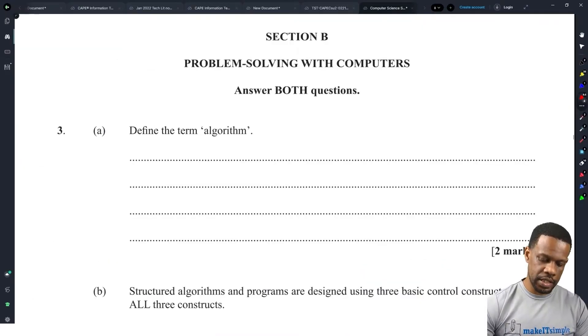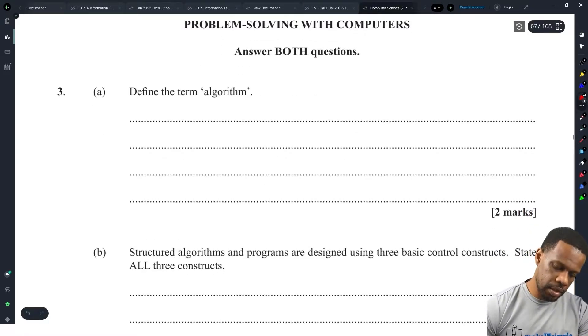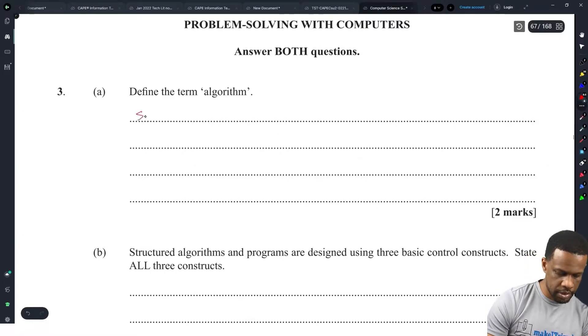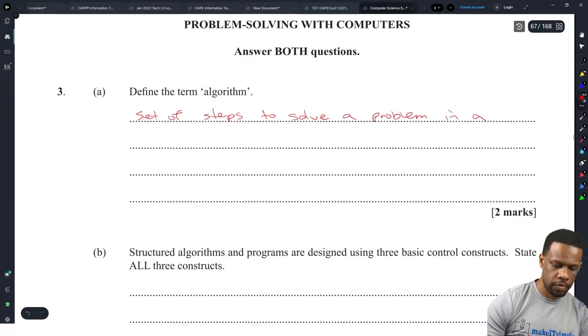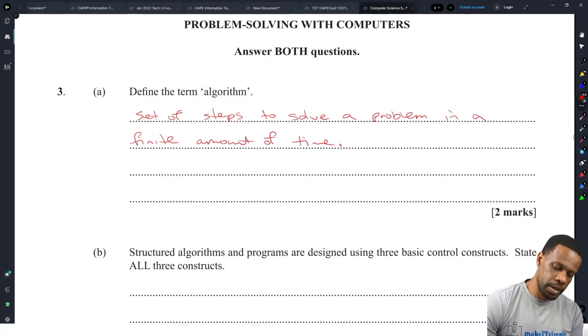Alright, let's go define the term algorithm. An algorithm is a set of steps to solve a problem in a finite amount of time. The steps to solve a problem in a finite amount of time. Yeah, that's the algorithm.